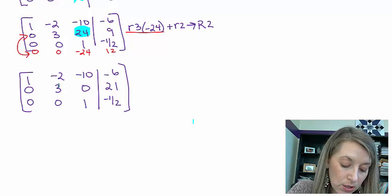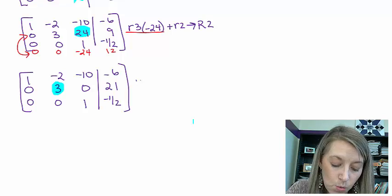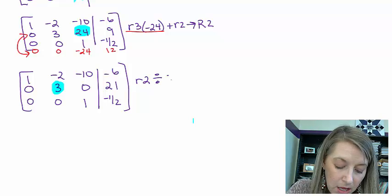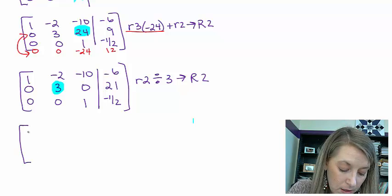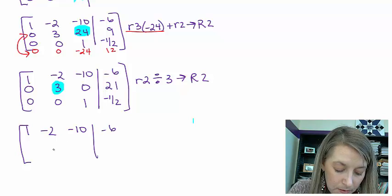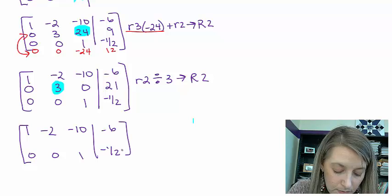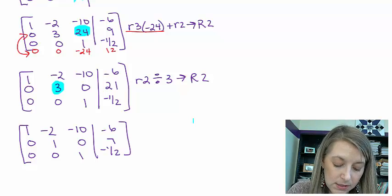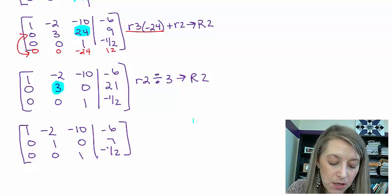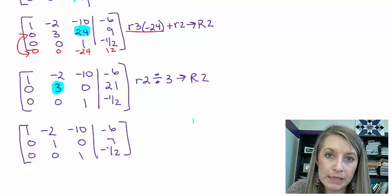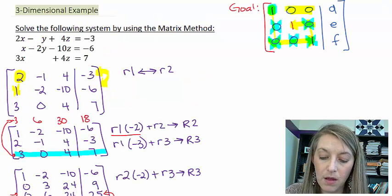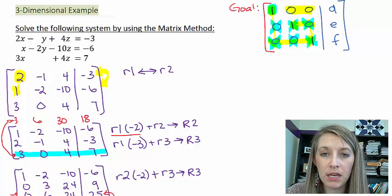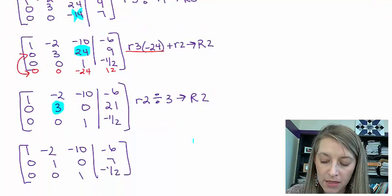Now I need to make the 3 into a 1. The easiest way is to divide row 2 by 3. That gives me 0, 1, 0, 7. So I've got two of my answers: y equals 7 and z equals negative one-half. Row 1 and row 3 stay the same. I now have my last two operations to get the zeros above the leading entries in column 1.